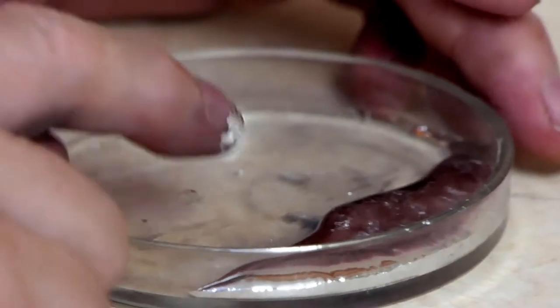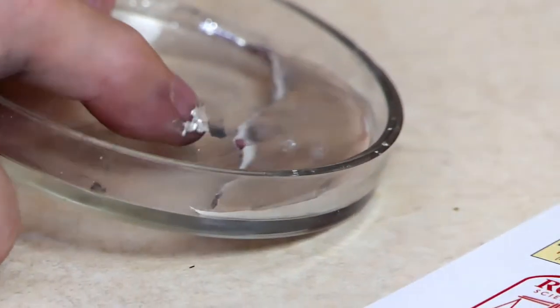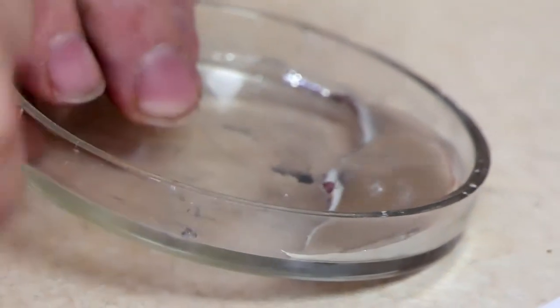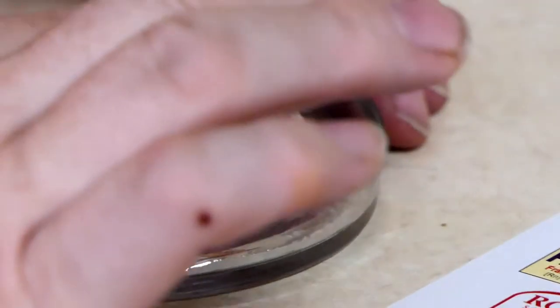It forms what we call a positive meniscus. Instead of water spreading out and going down in the middle, the gallium makes this closer join with the glass and then bulges out. So positive meniscus.